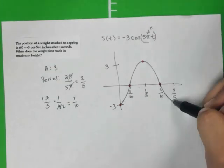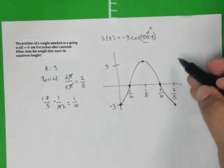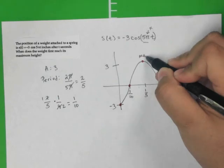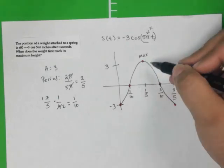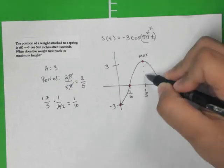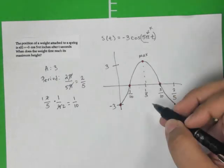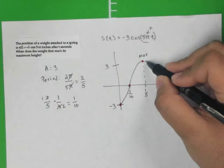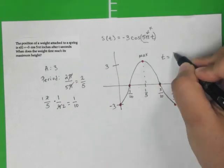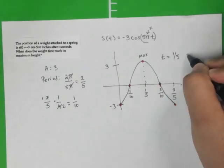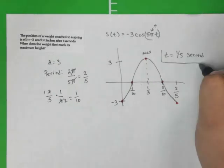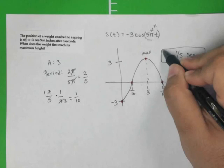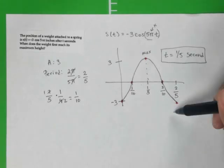And we see here that the maximal height that it reaches is right here, where we have 3 inches. And how long did that take? Well, it actually took 1 fifth of a second. So this is the maximal height, and this right here answers our question. And it's really easy to see after we inspect the graph.